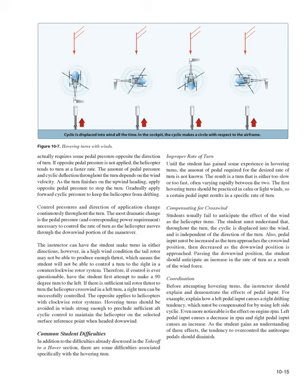Control pressures and direction of application change continuously throughout the turn. The most dramatic change is the pedal pressure and corresponding power requirement necessary to control the rate of turn as the helicopter moves through the downwind portion of the maneuver. The instructor can have the student make turns in either direction; however, in a high wind condition the tail rotor may not be able to produce enough thrust, meaning the student will not be able to control a turn to the right in a counterclockwise rotor system.